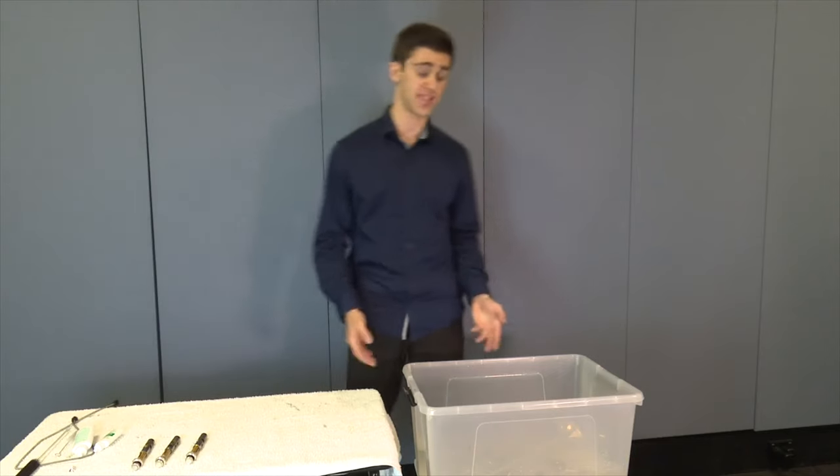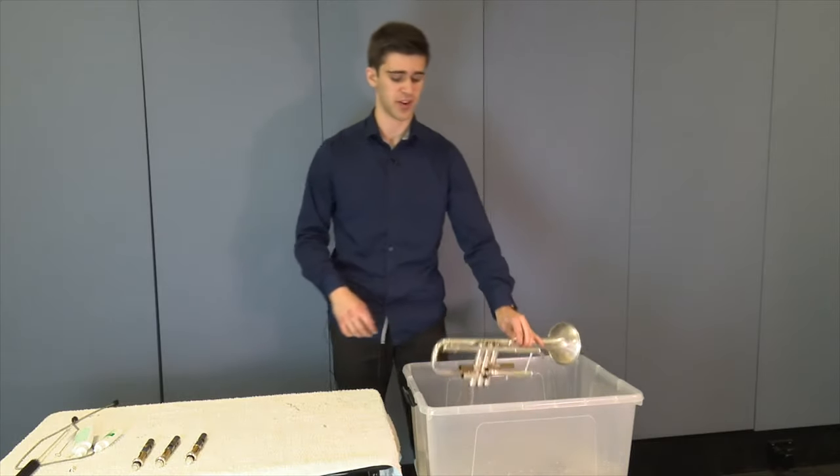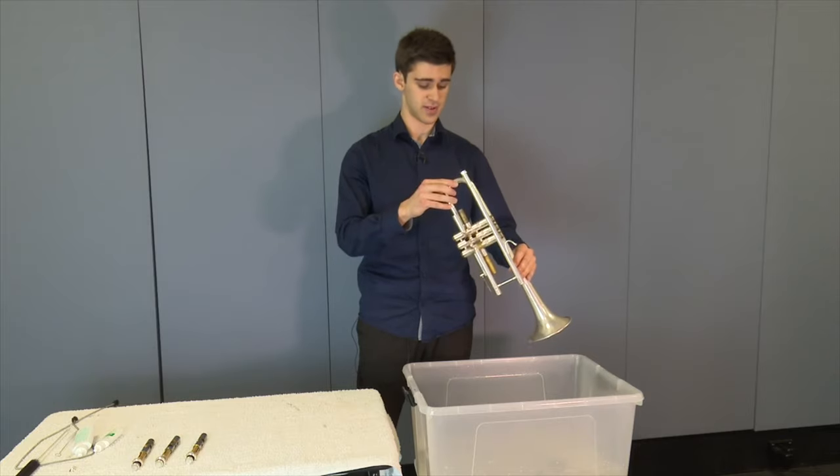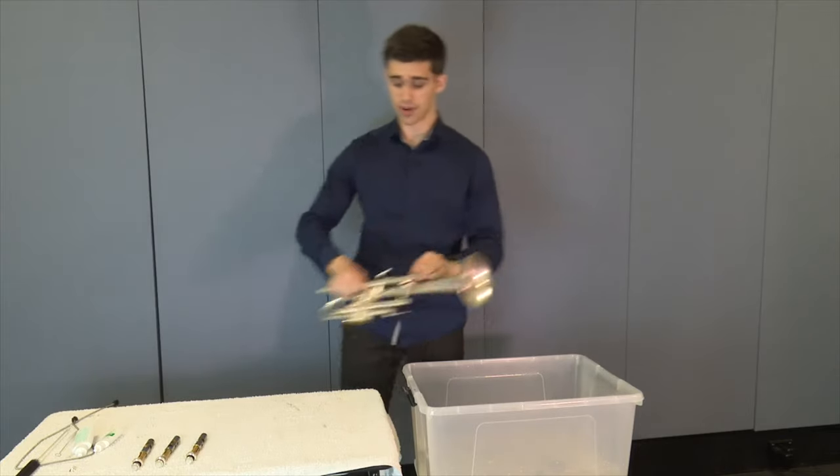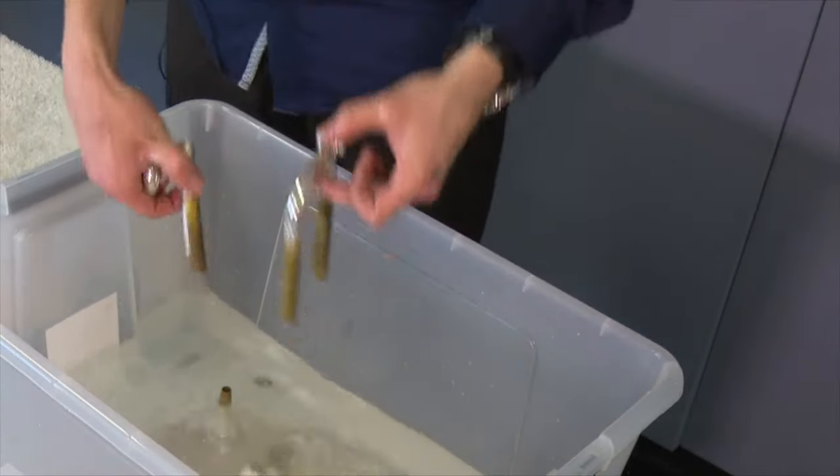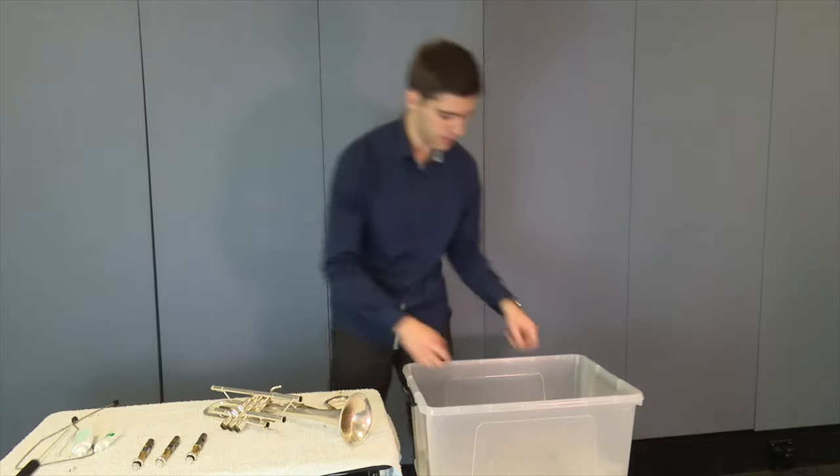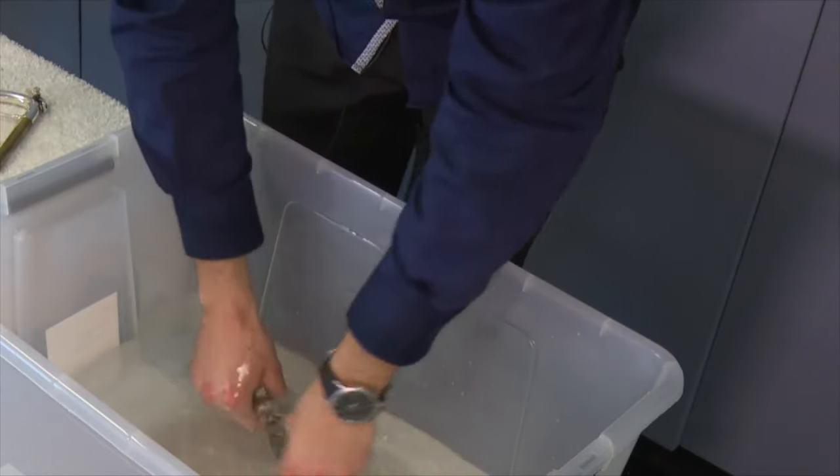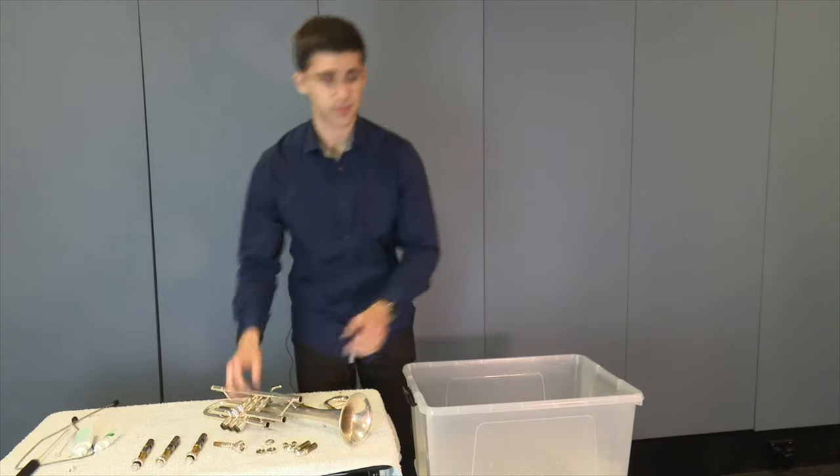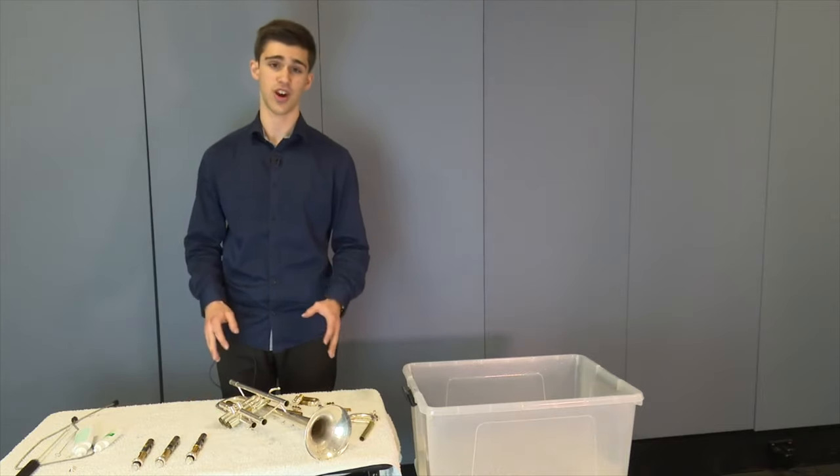Now that we've left our trumpet to sit for an hour, it's time to take it out. So I'm going to take out the main body of the instrument first. I'm going to let it drain and place it on this towel. What I'm going to do now is get all the slides, drain them out, and place them on the towel. Same goes for every single bit that's in here. You can now discard the water. Now that we've taken out the trumpet, we're going to let it dry for two hours.